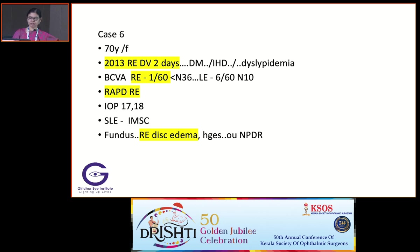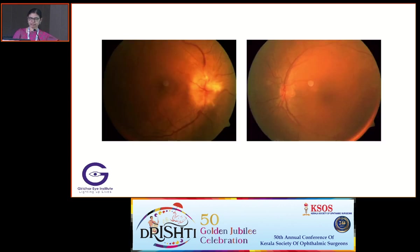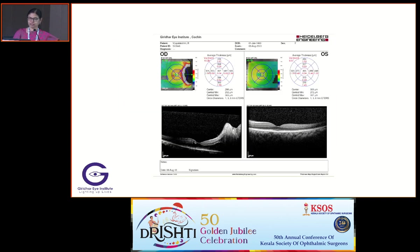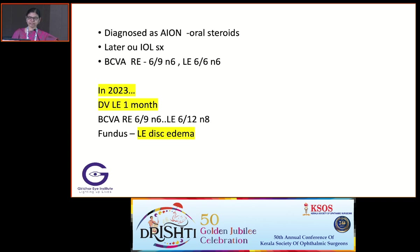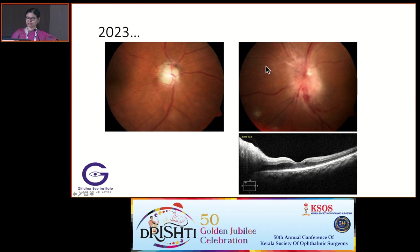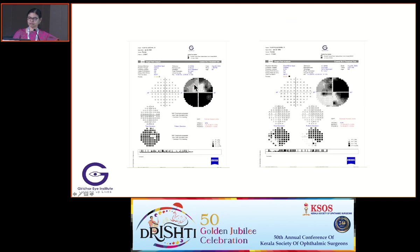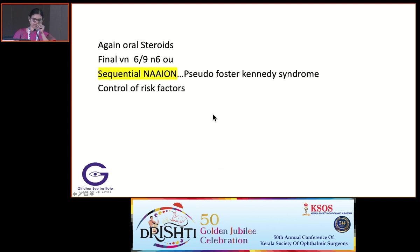A 70-year-old female with right-eye diminution of vision for two days, RAPD right eye, right-eye disc edema — treated as AION. Later, both-eye cataracts were done. After 10 years, she presented with left-eye disc edema and diminution of vision. The left-eye disc showed active edema and the right-eye disc had become pale. Fields showed altitudinal field defect. It's a case of sequential non-arteritic AION — pseudo-Foster Kennedy syndrome. Risk factors should be kept under control.